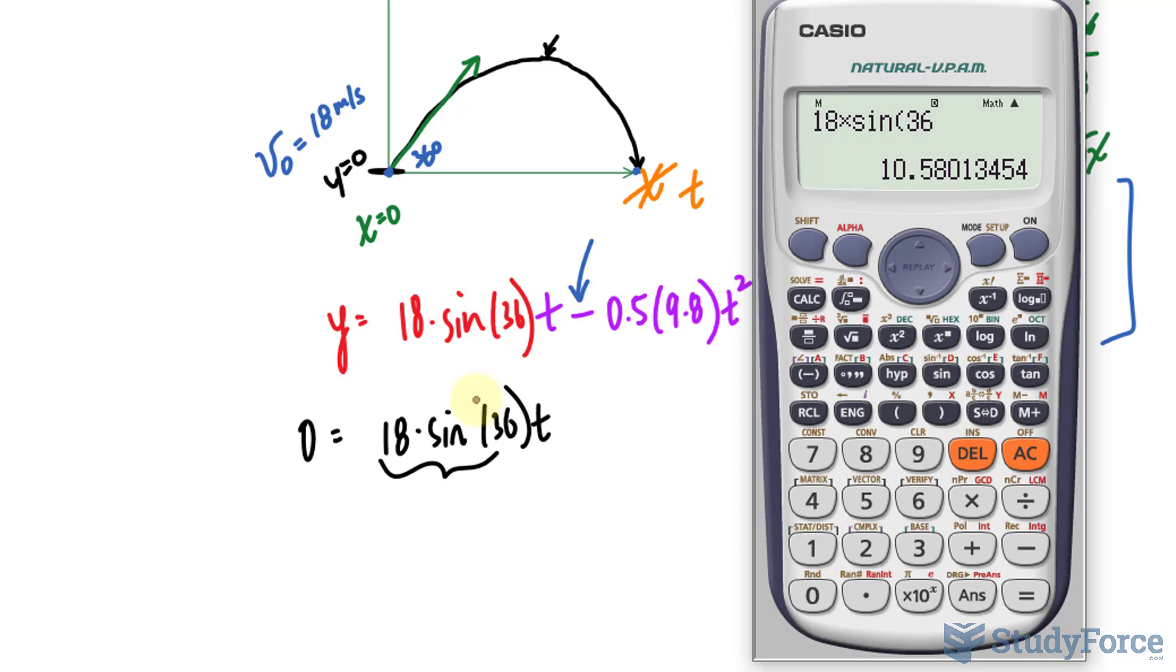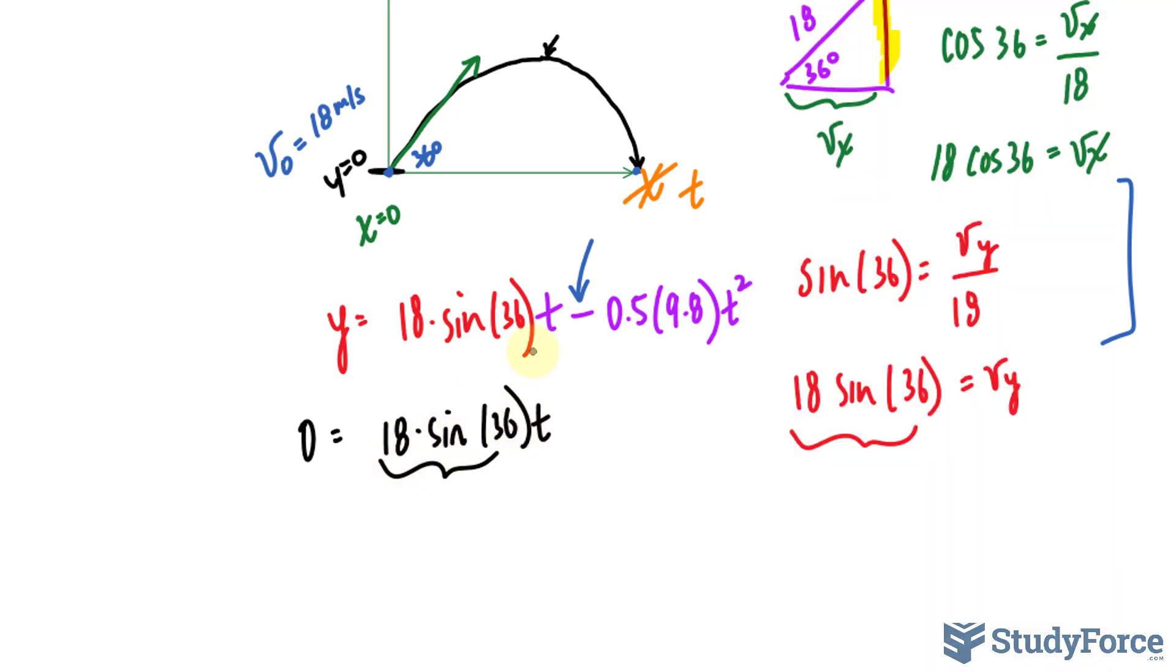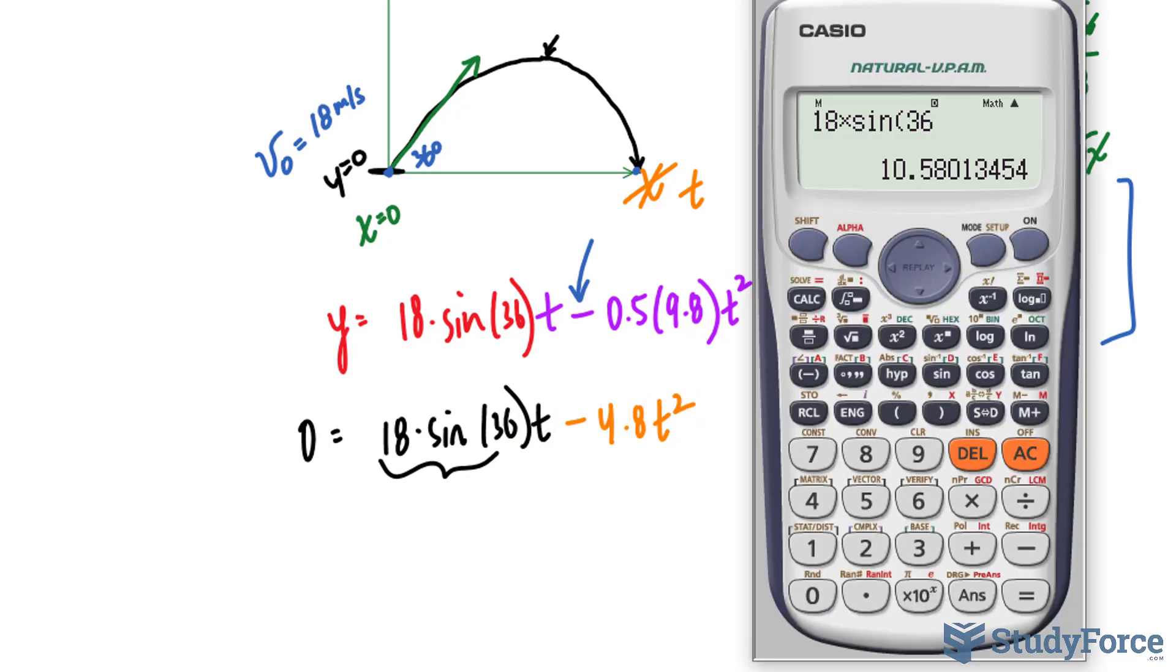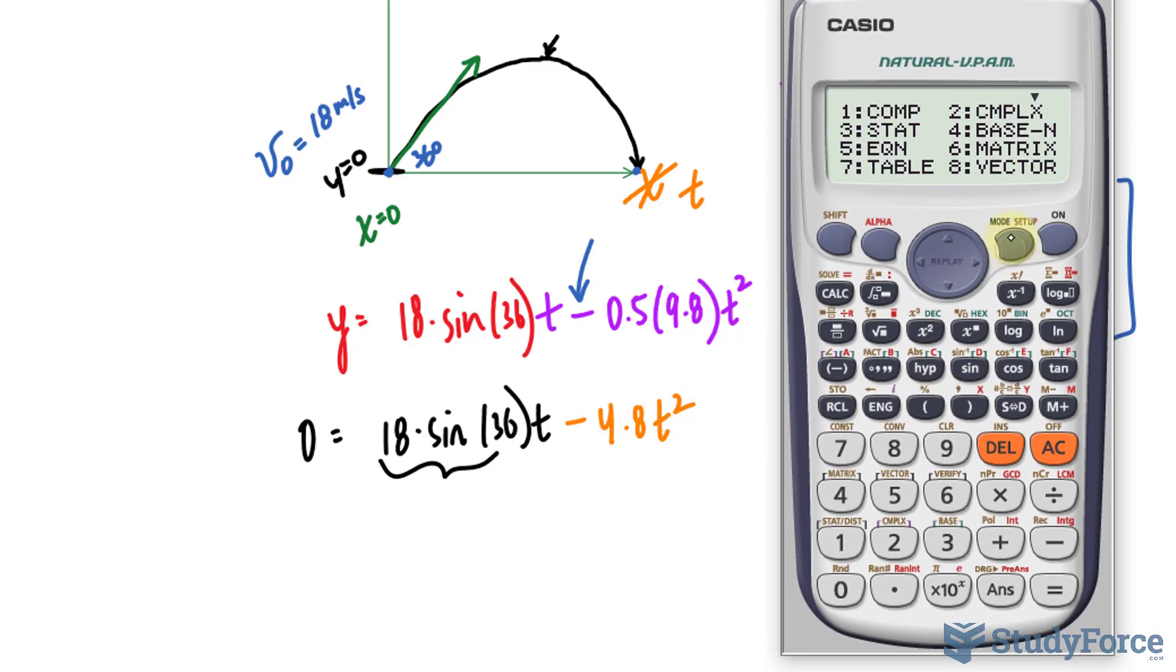So 18 times sin(36), that's equal to 10.5801. So we can eventually change this to 10.5801, but I like 18 sin(36) more. It's actually more compact and easy to work with. And this part, that simplifies to -4.8t². This is a quadratic, so we can use the quadratic formula to find out what t is. And there's a function on most scientific calculators. For me, it's mode 5 and 3, where you plug in the values and it will give you the roots.